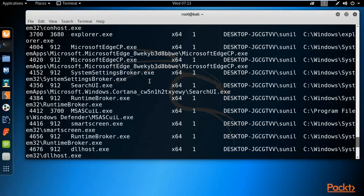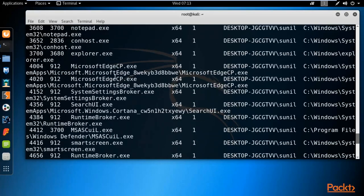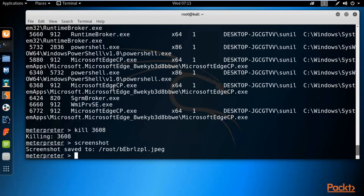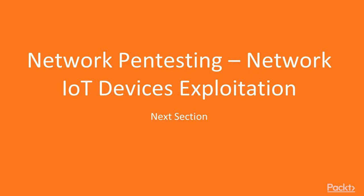These are some basic commands available in Meterpreter. You can try more commands listed under 'help'. To summarize this section: we learned about frameworks available to bypass antivirus and Windows Defender, successfully bypassed Windows 10 Defender, learned how to bypass Windows 10 antivirus, and covered Meterpreter commands used to perform various operations on the victim machine. In the next section we are going to learn about network penetration testing and network IoT device exploitation.